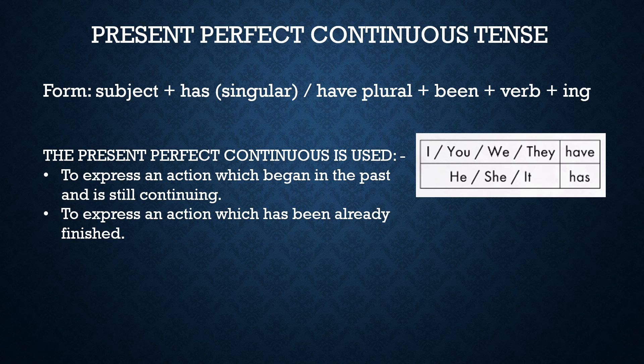The next tense is the present perfect continuous. We make it with the subject plus has/have plus been plus the verb plus -ing. For example: 'I have been hearing strange noises,' 'He has been hearing strange noises.'